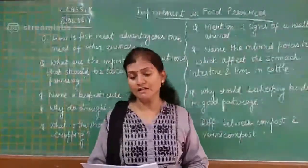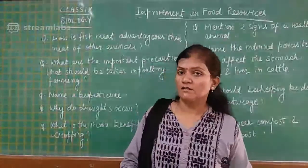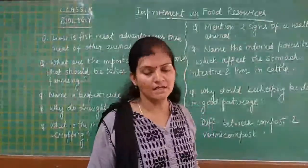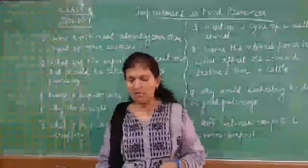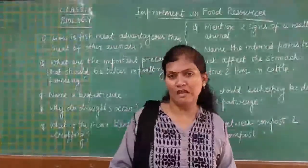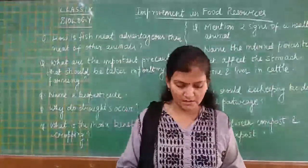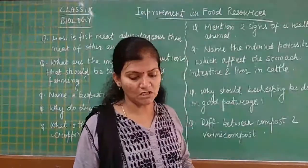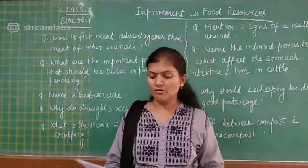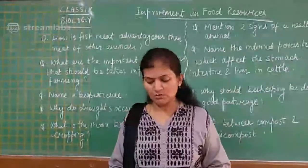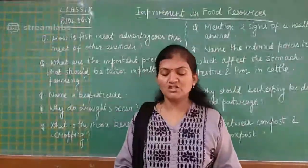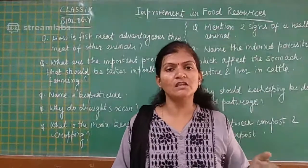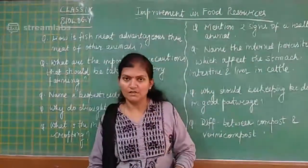Which has more fat content — egg or meat? We get more fat from egg, which is around 12 percent. The next question is: name two sources of Vitamin B2 and Vitamin B12. The answer is milk and meat — from both you can get B2 and B12. Milk animals are animals reared specifically for milk production.